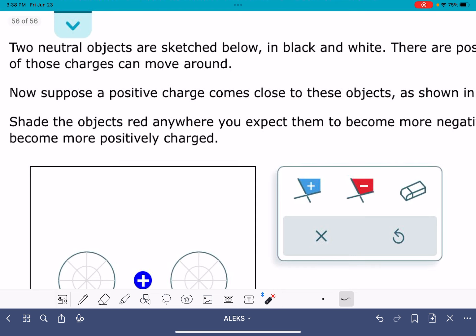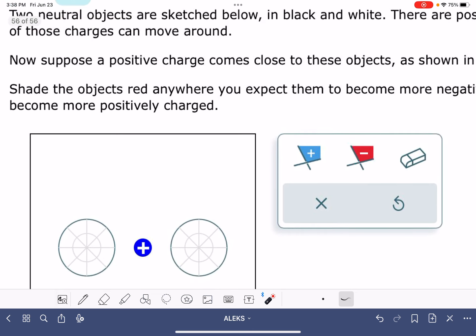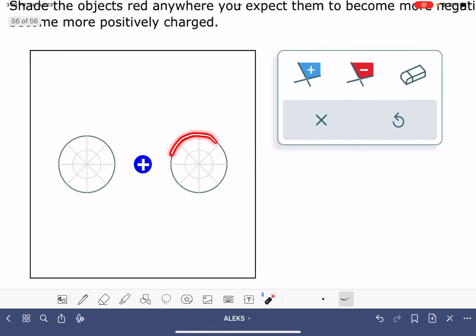The problem tells us that the objects are neutral. The objects are always going to be neutral. That means this object right here is neutral, and this object is neutral as well.